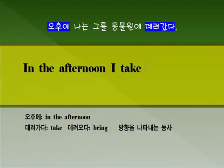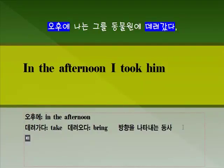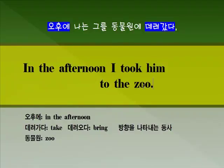데려갔다 — 시제가 과거니까 'took'라는 단어를 씁니다. 누구를? 그를. 어디에 데려갔습니까? 동물원에 데려갔습니다. 동물원은 영어로 zoo이므로 'to the zoo' 이렇게 문장을 씁니다. 다시 한번 확인해 두세요: 오후에 'in the afternoon', 데려가다 'take', 데려오다 'bring'이라는 단어를 쓴다는 것 주의하시기 바랍니다.